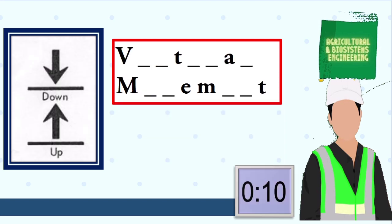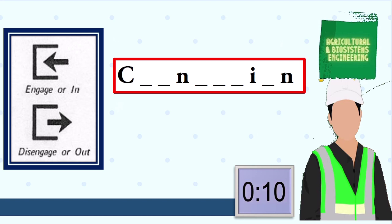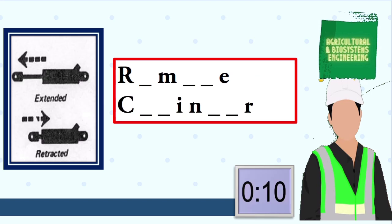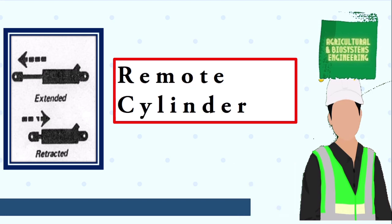Next symbol, your 10 seconds starts now. The answer is vertical movement. Next symbol, your 10 seconds starts now. The answer is connection. The answer is remote cylinder.